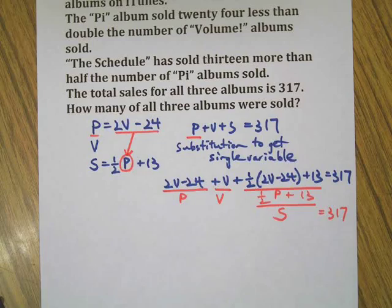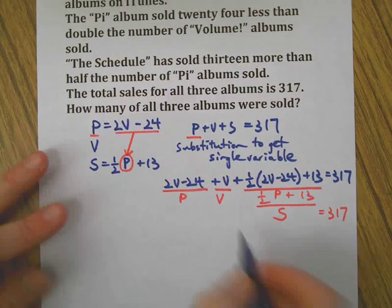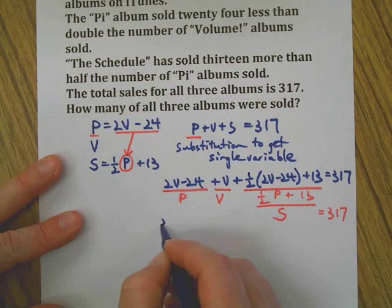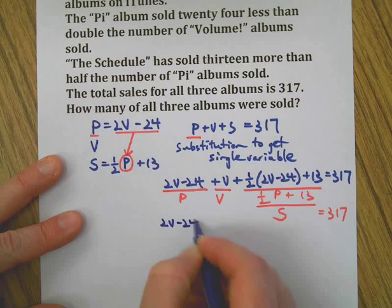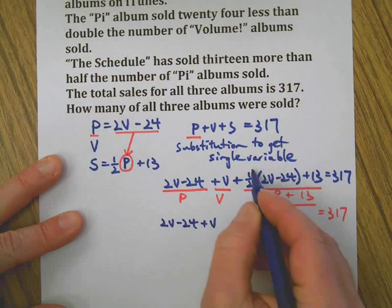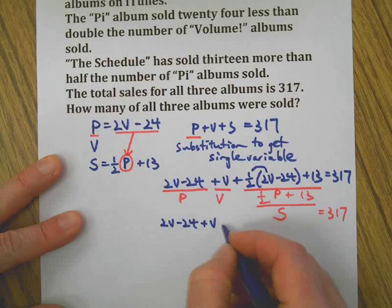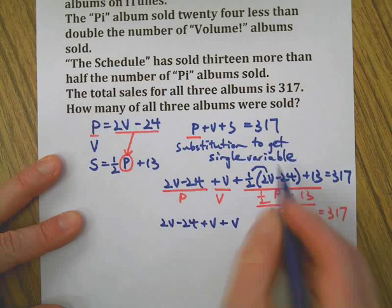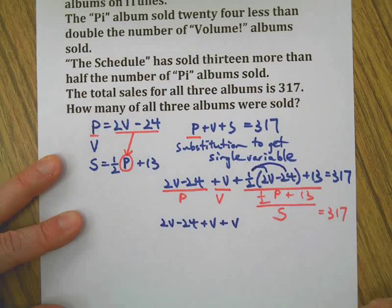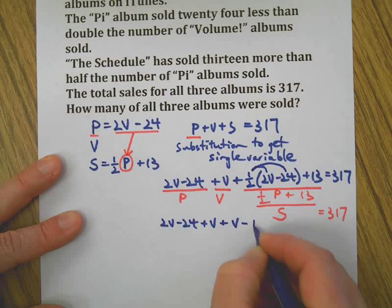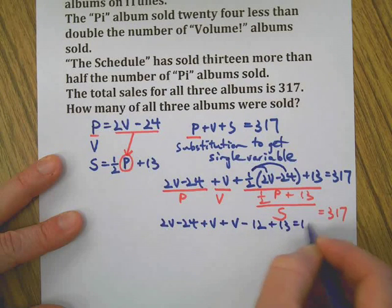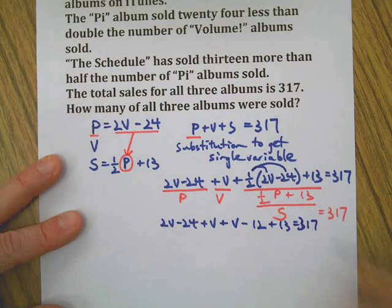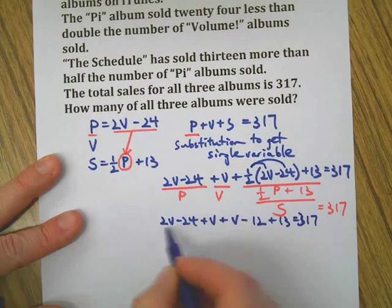Now we need to do some simplifying to get rid of parentheses here. So I'm just going to basically carry everything down. But 1/2 of 2 is 1, and 1/2 of negative 24 is negative 12.